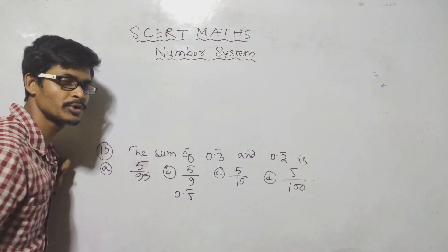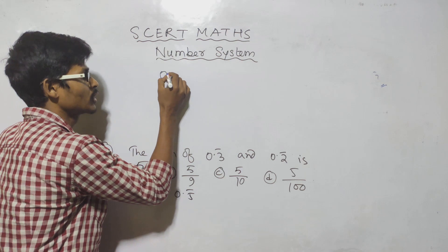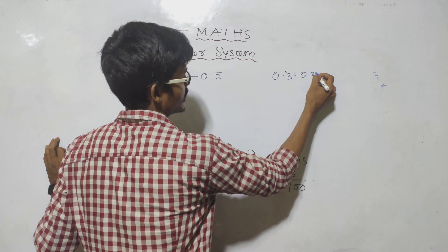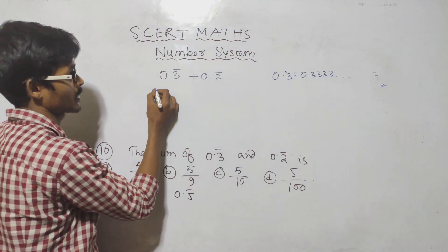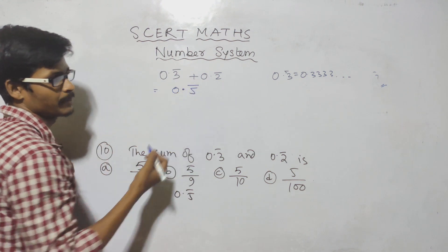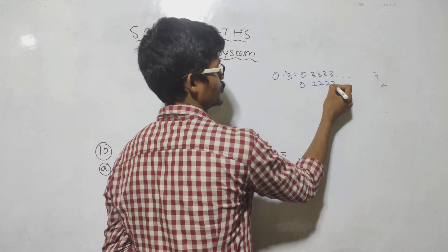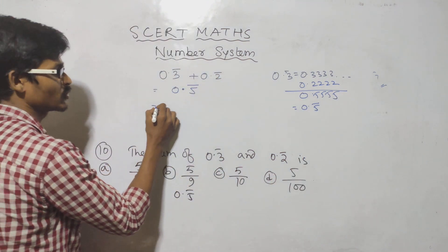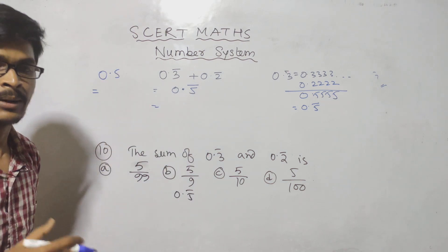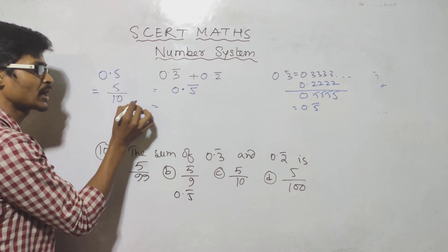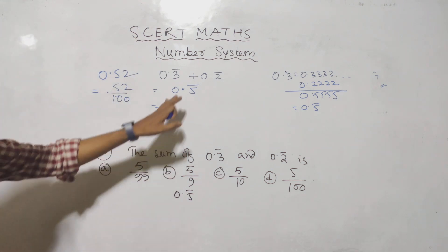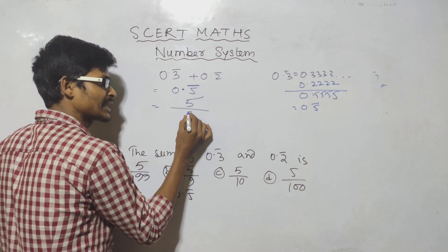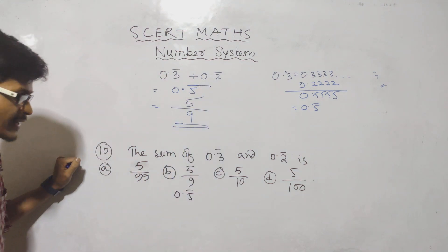The sum of 0.3 bar and 0.2 bar: 0.3 bar equals 3 by 9 and 0.2 bar equals 2 by 9. Converting: 0.5 bar in fraction form. The sum gives 5 by 9 as the answer, which is option 1.